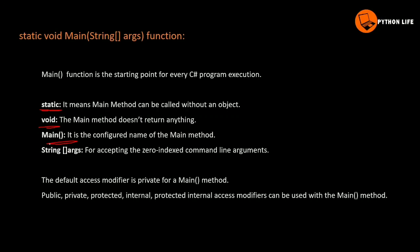Next is string args. This is the string args for accepting the zero-indexed command line arguments. The default access modifier is private for the main method. This main method is private. Private is the access specifier. The access specifier is separate for the main method. The main method access modifiers can be: public, private, protected, internal, or protected internal.